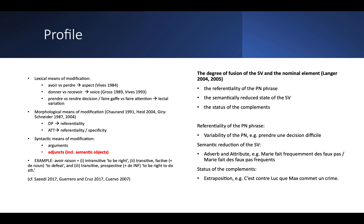I've given an example of a support verb construction and how much it can change even if you don't do anything to the verb lexically or morphologically — only syntactically. Avoir raison is what we have at the bottom of the slide. In order to check the degree of fusion of the support verb and the nominal element, I looked through Langer's syntactic tests. He tests referentiality of the predicative noun phrase, the semantically reduced state of the support verb, and the status of the complements. In terms of referentiality of the predicative noun, what's relevant is whether you can modify it — whether you can put a determiner phrase or adjective with it. Here you have une décision difficile — difficile goes after, but if you had une bonne décision, you'd already have another element in the field.